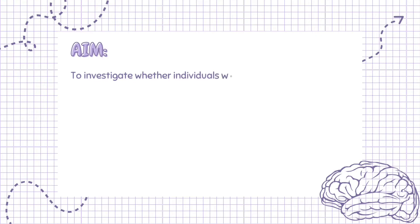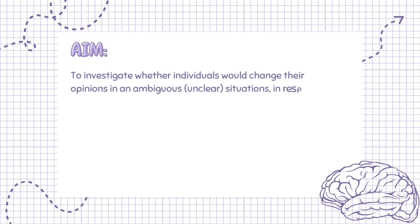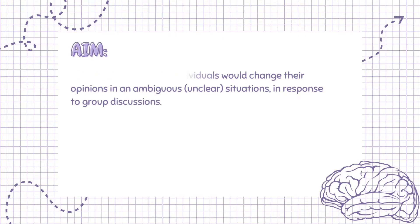Jeunesse, 1931, aimed to investigate whether individuals would change their opinions in ambiguous, unclear situations, in response to group discussions.